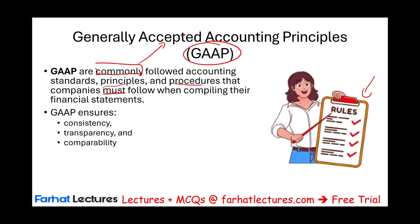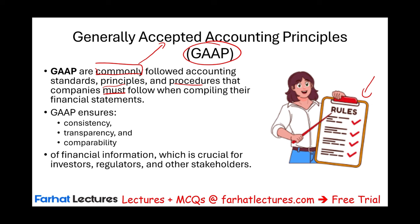So GAAP ensures consistency, transparency, and comparability of financial information, which is important for investors, creditors, regulators, and stakeholders. Stakeholders means anyone that's interested in this information, specifically investors and creditors — those are the groups that invest in you and give you money.